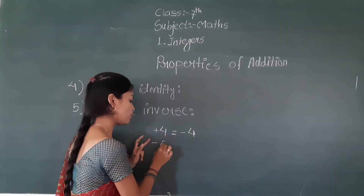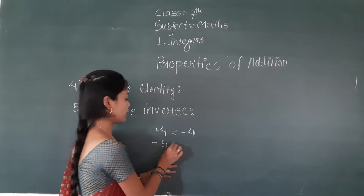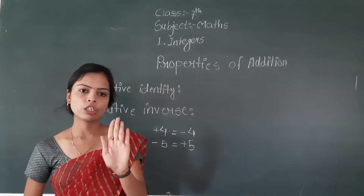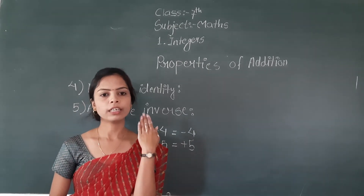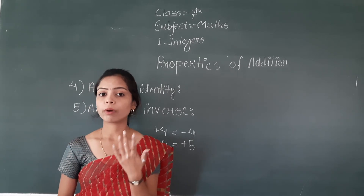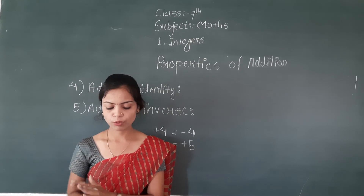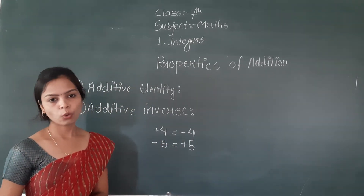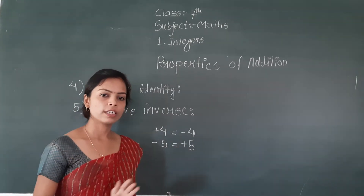What is the additive inverse of minus five? The additive inverse of minus five is plus five. That means the additive inverse of a positive integer is a negative integer, and the additive inverse of a negative integer is a positive integer. But what about zero?